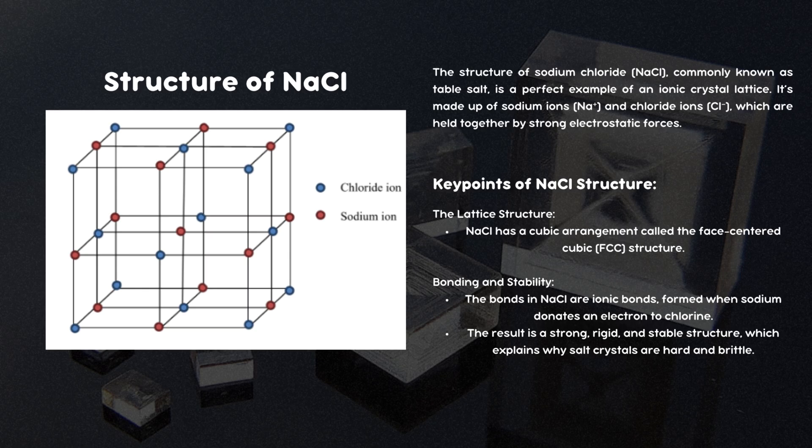The lattice structure of sodium chloride has a cubic arrangement called the face-centered cubic, FCC structure. The bonds in sodium chloride are ionic bonds formed when sodium donates an electron to chlorine. This results in a strong, rigid, and stable structure which explains why salt crystals are hard and brittle.